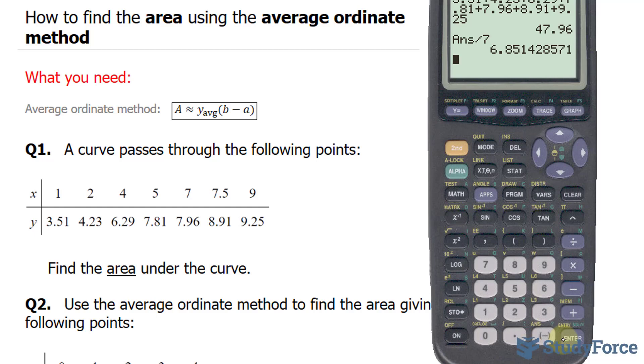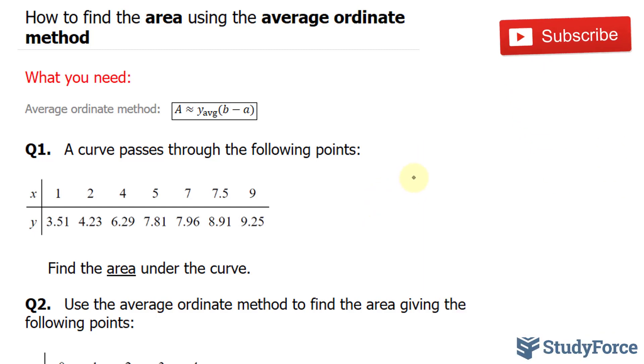Given that we have three significant figures all throughout here, we should also keep it at three significant figures. So anything after this five will be discarded, 6.85. What this number represents is y average. Remember that we are using this formula to do this.